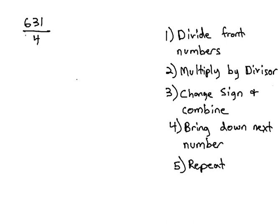If we were to divide 631 by 4 using long division, we would put the 4 in front of the 631, and we would follow a simple five-step process to divide them. We would start with dividing the front numbers, 4 into 6, once.